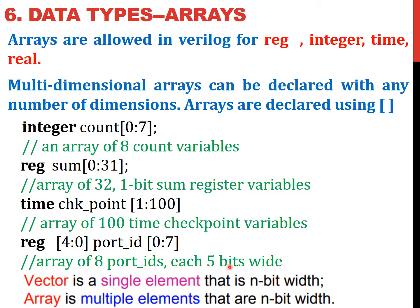To conclude: a vector is a single element — one number which is multiple bits wide. For example, 1010 is one number that is 4 bits wide. But an array is multiple elements that are n bits wide. For example, in this case we can have 8 five-bit numbers like 01010 in that particular array. So a vector is a single element, whereas an array is multiple elements which are n bits wide.